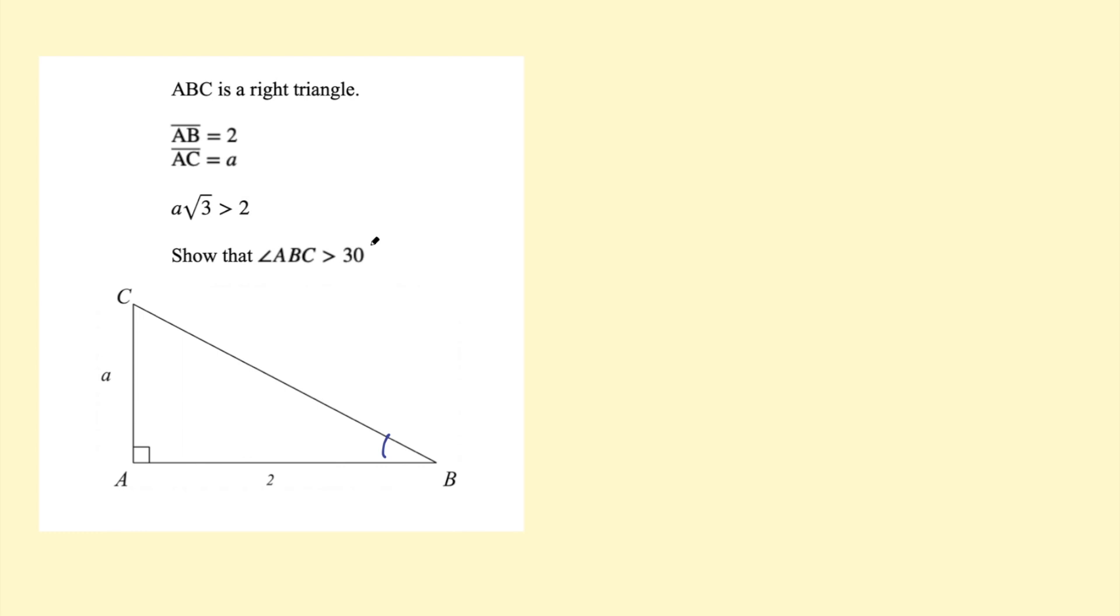Now, someone posted an answer to this involving using a calculator, so I'll go ahead and show you how you could solve this without a calculator. So the first thing you can say is assume this angle is 30 degrees. So assume angle ABC is 30 degrees. ABC equals 30 degrees.